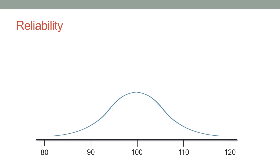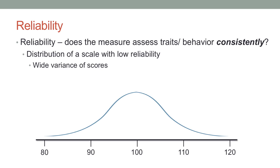Even though on average it is getting their IQ of around 100, sometimes when they get tested they have an IQ as high as 120, maybe even as low as 80. In other words, the scores are just all over the place — there's no consistency there. So that would be a scale with low reliability.